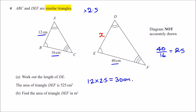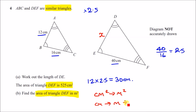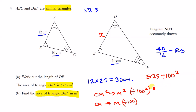The area of triangle DEF is 525 centimetres squared. Find the area in metres squared. To go from centimetres to metres, divide by 100. For the squared version, divide by 100 squared. So in the calculator: 525 divided by 100 squared gives 0.0525 metres squared. That's it for number four.